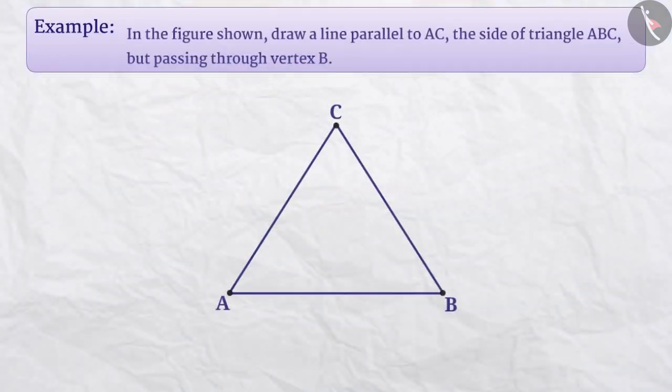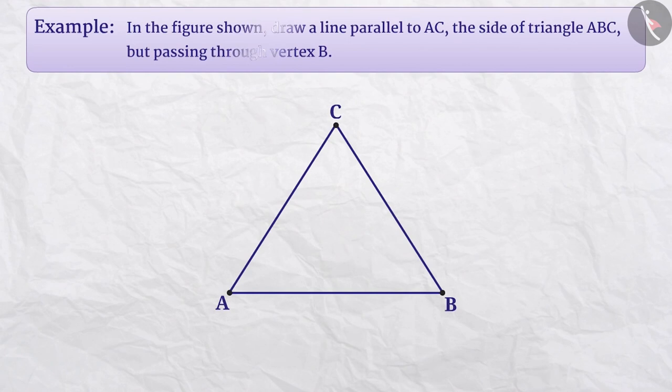Next example. In the given figure, draw a line parallel to side AC of triangle ABC but passing through point B. Can you tell us, how can we do that?